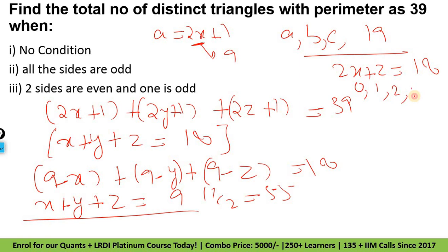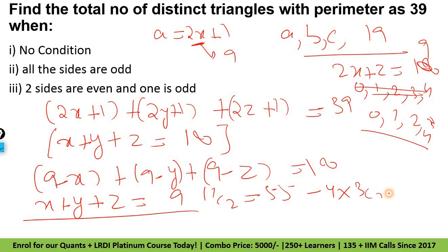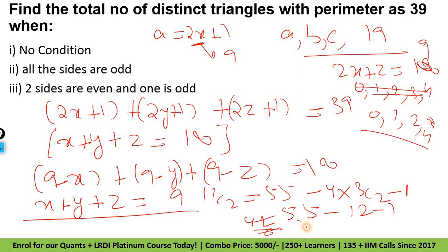Ab yahaan fir lagao total number of non-negative integral solutions: 9 plus 3 minus 1, C 3 minus 1 = 11C2 = 55. Ab jab x is equal to y — 2x plus z = 9, x kya le sakta hai: 0,1,2,3,4 — that gives 5 values. Minus equilateral case — 55 minus 12 minus 1 = 42. 42 by 6 = 7 scalene. Plus 4 pure isosceles plus 1 equilateral = 12. So 12 is the answer for this question.